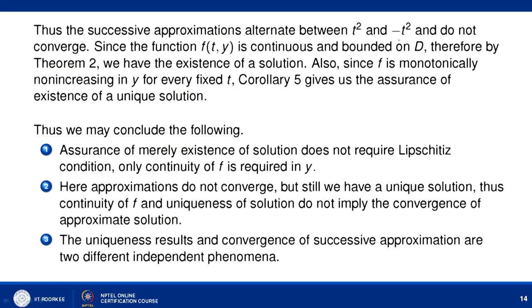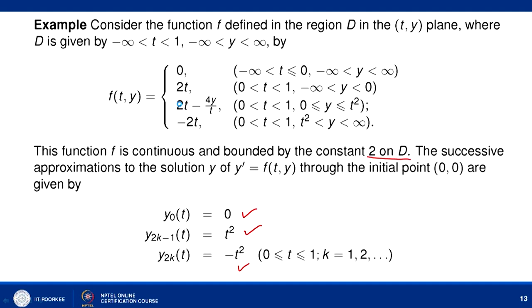The successive approximations alternate between t² and -t² and do not converge. Since f(t,y) is continuous and bounded, Theorem 2 is applicable — existence of a solution is guaranteed. Furthermore, f is monotonically non-increasing in y for every fixed t, so Corollary 5 is also applicable, giving a unique solution. So the successive approximations exist but do not converge to a solution, yet the problem still has a unique solution.